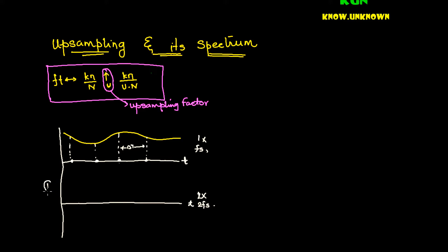Upsampling involves 2 different stages. We will discuss only Stage 1 in this video; Stage 2 will be discussed once we build the case on the spectrum. The first step, when you want to upsample an already discrete sequence, is to stuff zeros in between the original samples. Because I am upsampling by a factor of 2, I am going to stuff one zero between each pair of samples.